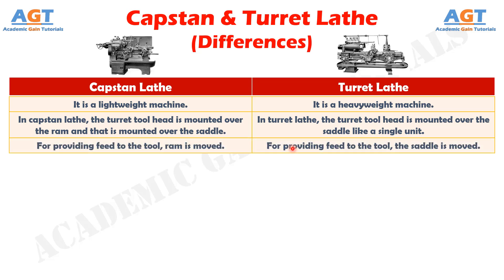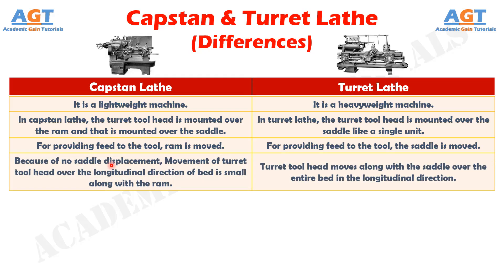In capstan lathe, for providing feed to the tool, the ram is moved, whereas in turret lathe, the saddle is moved. In capstan lathe, because of no saddle displacement, movement of the turret tool head over the longitudinal direction of the bed is small along with the ram, whereas in turret lathe, the turret tool head moves along with the saddle over the entire bed in the longitudinal direction.